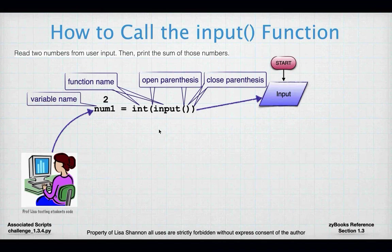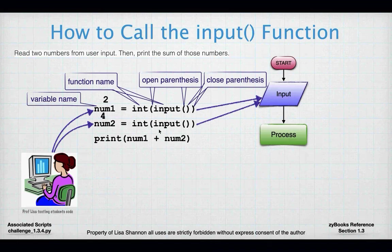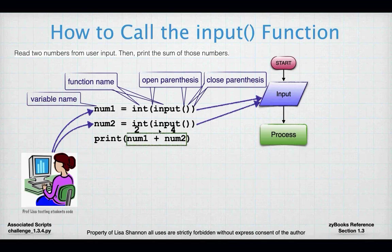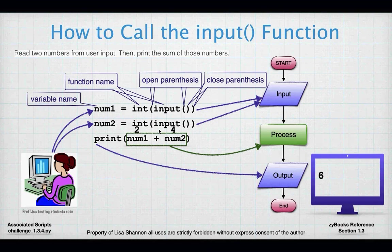I have a second line: 'num2 = int(input())' — I get something in, convert it to an integer, and store it in num2. So num1 is 2 and num2 is 4 — that's input. Now process: I'm going to print num1 plus num2. The actual process part, num1 and num2, carries those values with their names — that's process even though it's inside a print statement. Then we have output: we're outputting 6 to the monitor, and we're done.